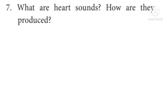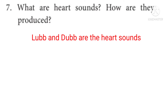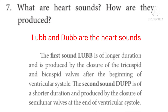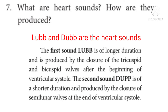Question 7: What are heart sounds? How are they produced? Lub and dub are the heart sounds. The answer for how they are produced is on page number 210. The first sound, lub, is of longer duration and is produced by the closure of the tricuspid valve. The second sound, dub, is of shorter duration and is produced by the closure of the semilunar valves at the end of ventricular systole.